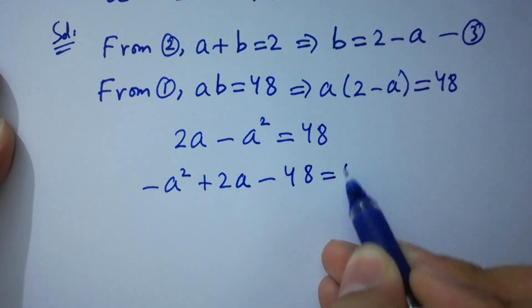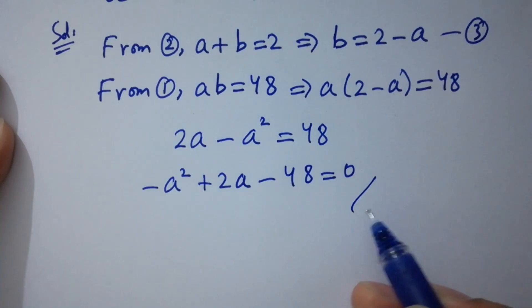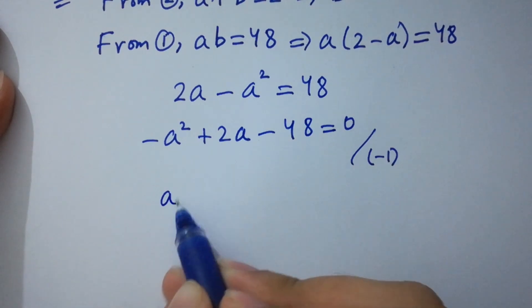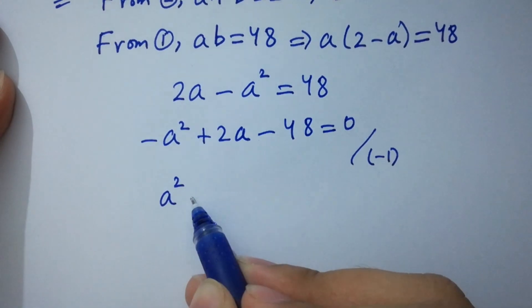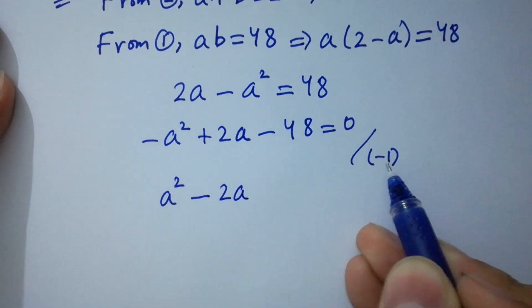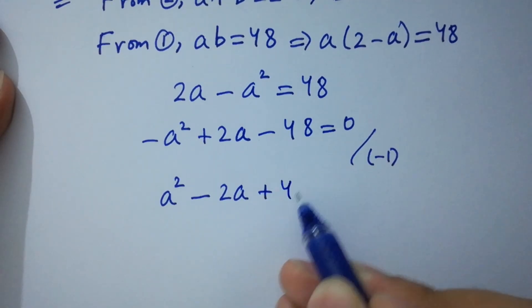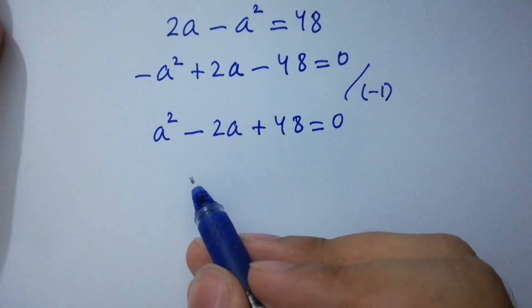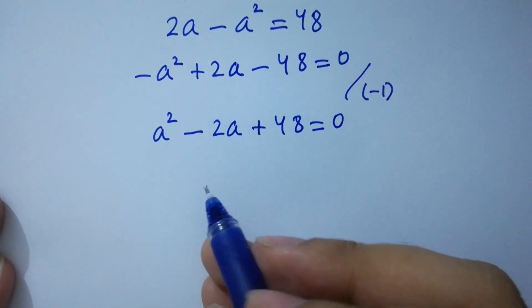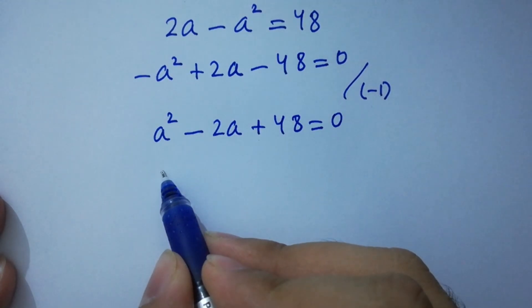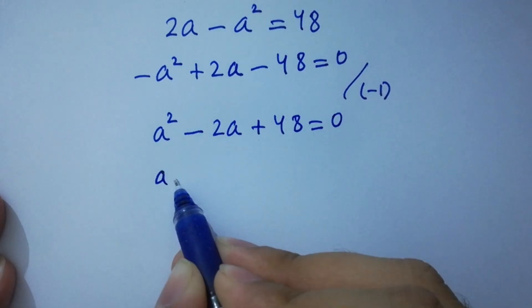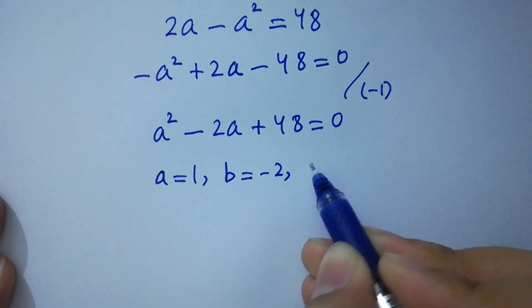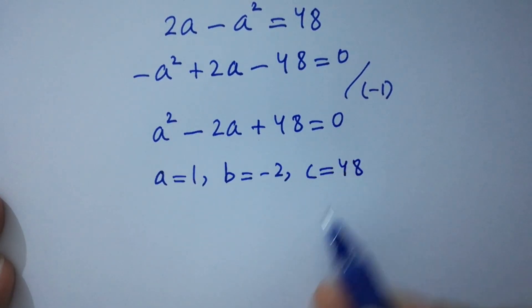Divide by minus 1 on both sides: a squared minus 2a plus 48 equals 0. This is a quadratic equation. By comparing, we have a equals 1, b equals minus 2, and c equals 48.